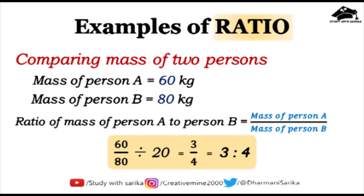Let's do one question. We have to compare the mass of two persons: mass of person A is 60 kg and mass of person B is 80 kg. The question asks us to find the ratio of mass of person A to person B. So mass of person A goes on the numerator side and mass of person B goes on the denominator side, giving us 60 divided by 80.